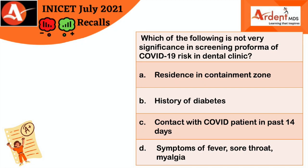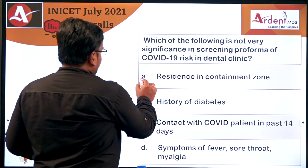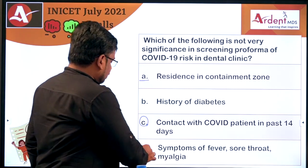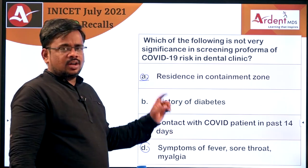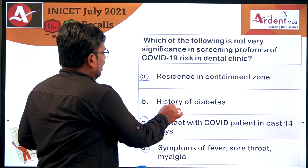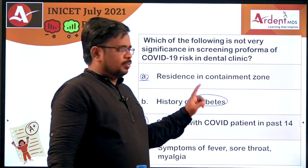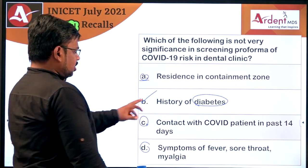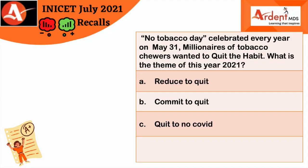The next question was from the COVID-19 topic: which of the following is not significant in the screening proforma for COVID-19 risk in your dental clinic? High-risk factors include: patient coming from a containment zone, contact with a COVID-19 patient in the past 14 days, or symptoms of fever, sore throat, or myalgia. However, history of diabetes — though associated with higher mortality — is not considered a high-risk screening factor. So the answer is history of diabetes.